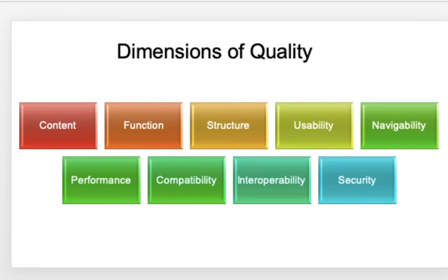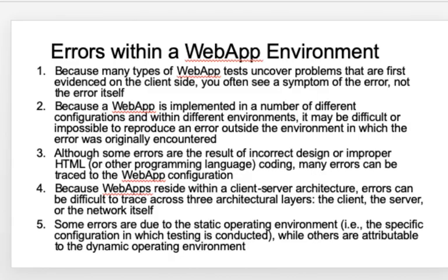Moving on to testing web applications. When testing any kind of web app, there are several dimensions of quality — content, function, structure, usability, navigability, security, compatibility, performance, interoperability, and more. Many types of errors are normally encountered on the client side. You will often see a symptom of the error, not the error itself. A web app is implemented with a number of different configurations and environments, making it very difficult to reproduce an error outside its environment.